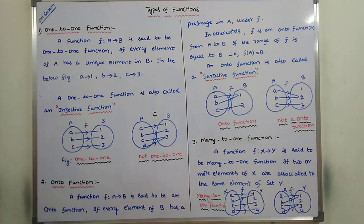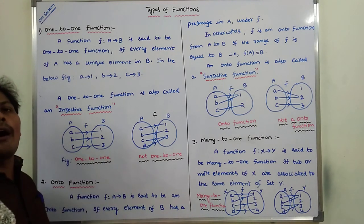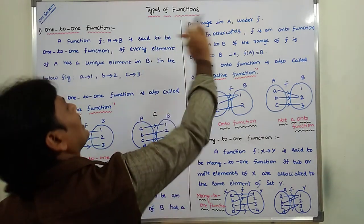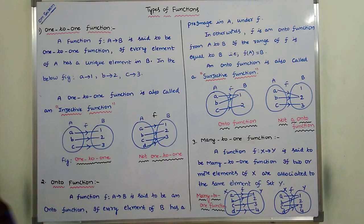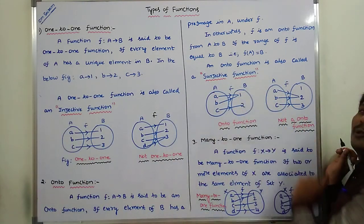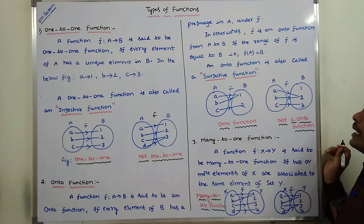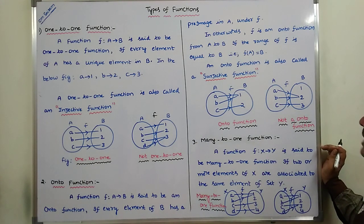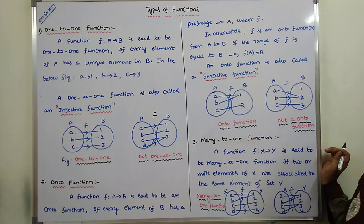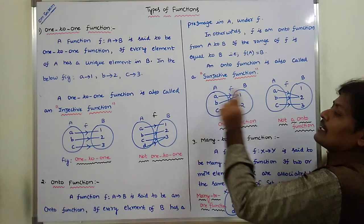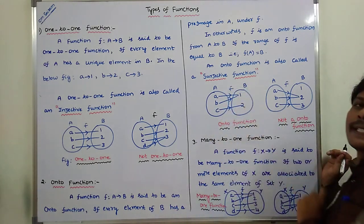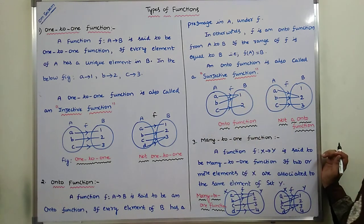Next, onto function. A function f from A to B is said to be an onto function if for every element of set B, there is a pre-image in set A under function f. For example, 1 has the pre-image a and b, and 2 has the pre-image c. All elements of set B have a pre-image in set A. Hence we can say that this function is called an onto function.